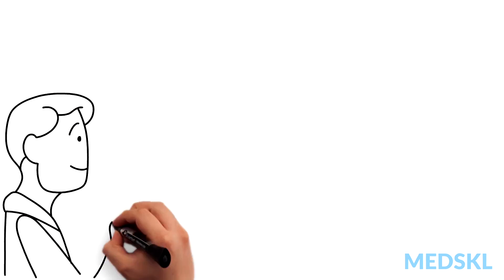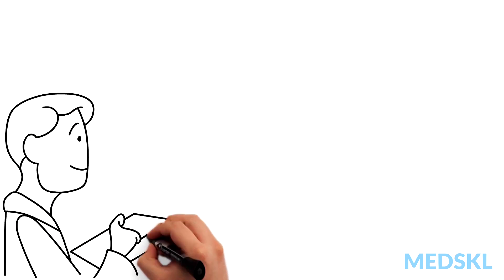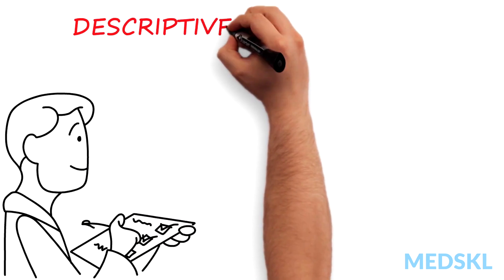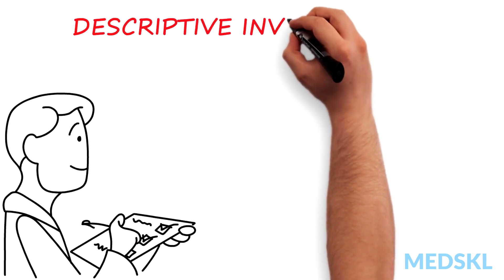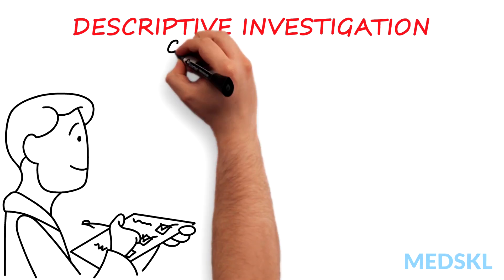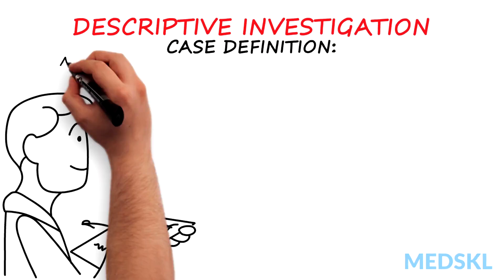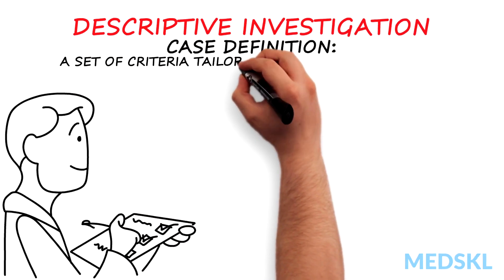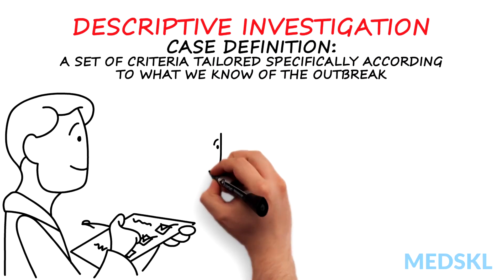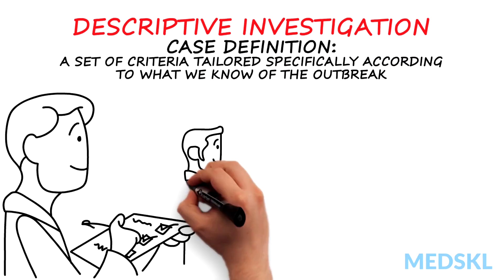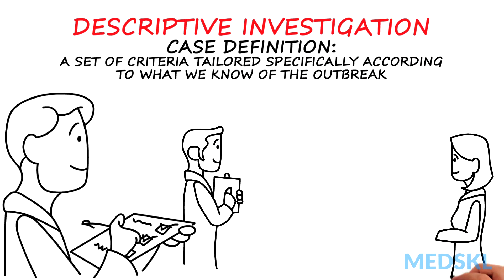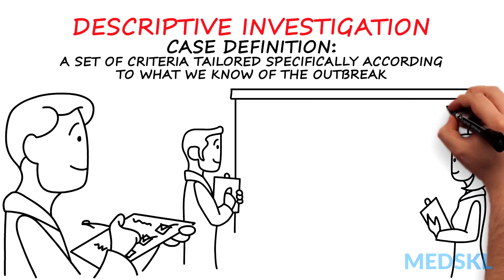If we decide it is probably an outbreak, we investigate. First, a descriptive analysis, starting with case finding according to a case definition. This case definition is a set of criteria tailored specifically to what we know of the outbreak. We search for all cases that fit the definition and describe them in time, place, and person.